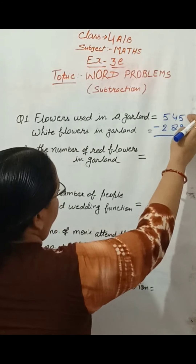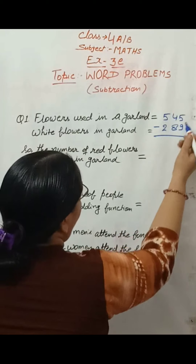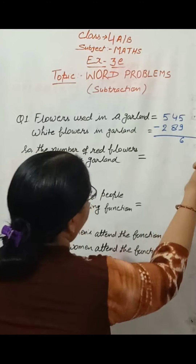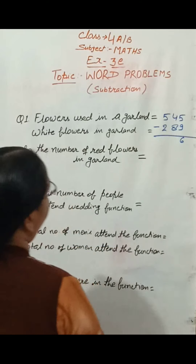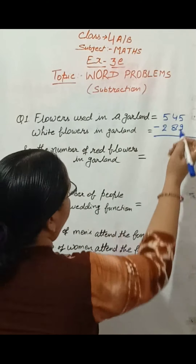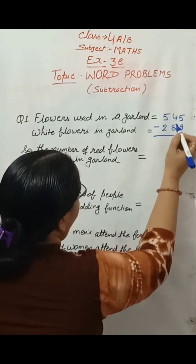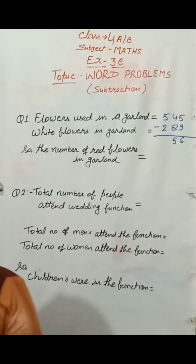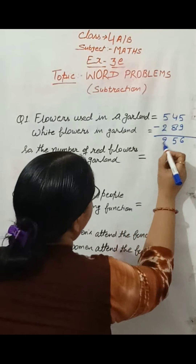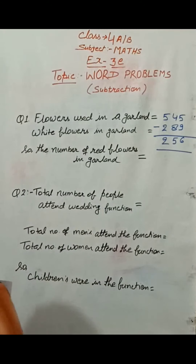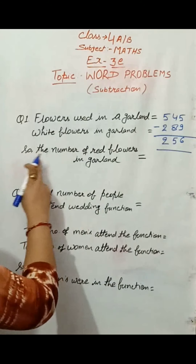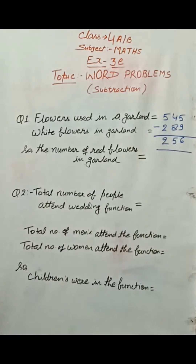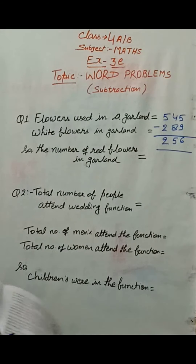Here, 15 minus 9 gives us 6. Then 9 plus carry gives us 5, and then 2. So the number of red flowers in the garland is 256.